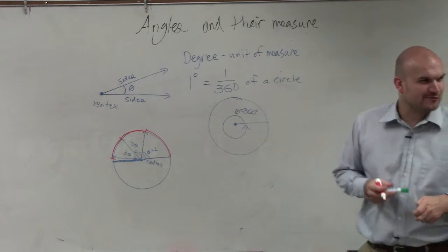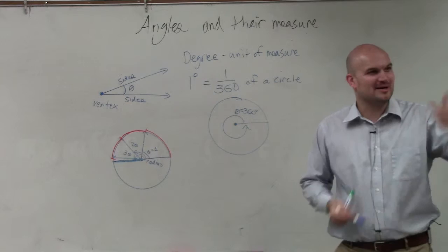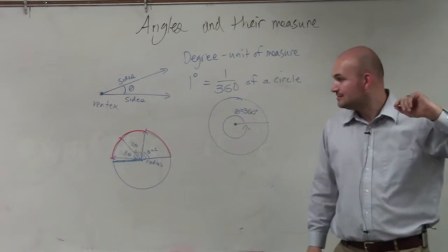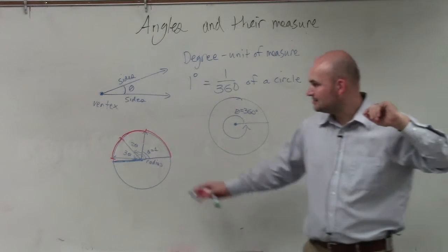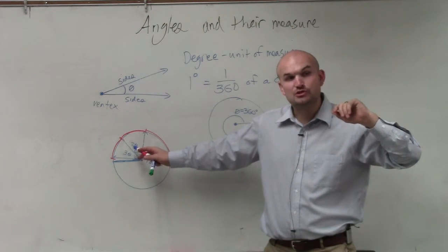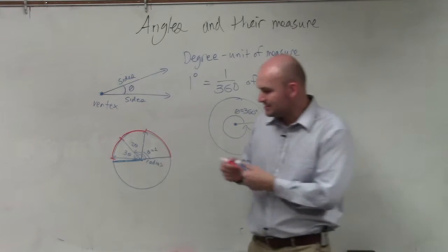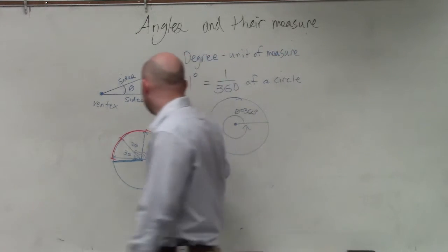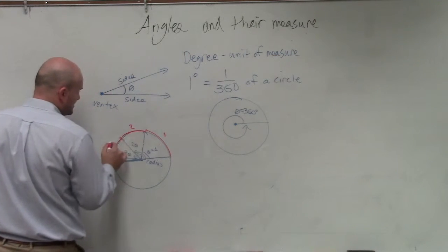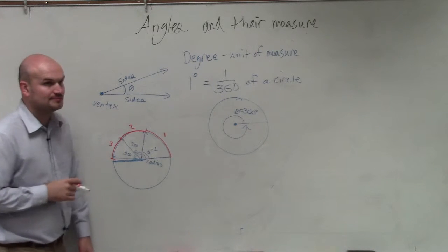Does anybody know how many radians go halfway around a circle? To represent this: one radian, two radians, three radians — that's two radians up to that point.